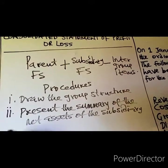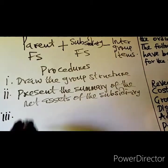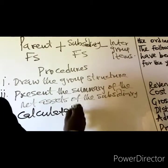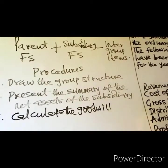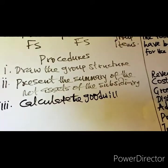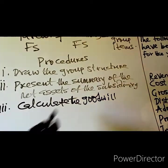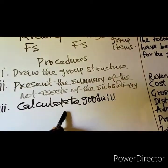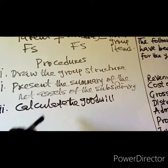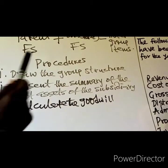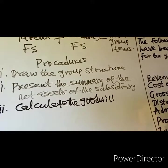Number three: calculate the goodwill. This will be required where the examiner specifically requires you to calculate goodwill, or where you are required to calculate the impairment loss that will be charged in the consolidated statement of profit or loss.